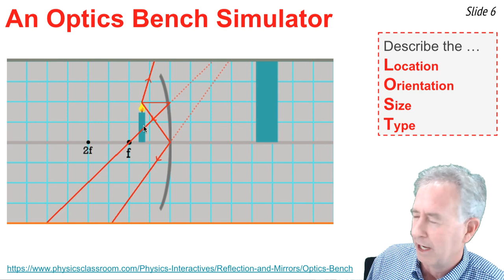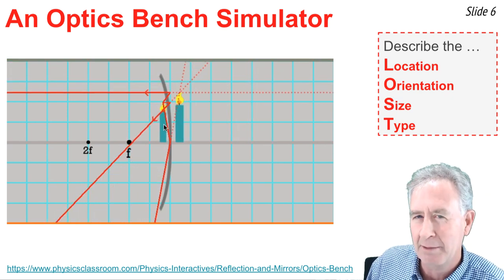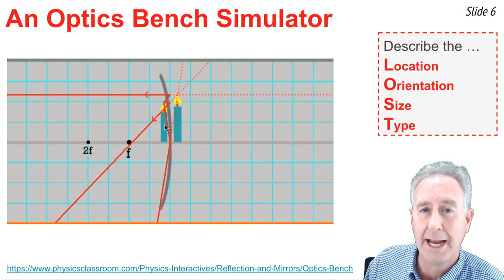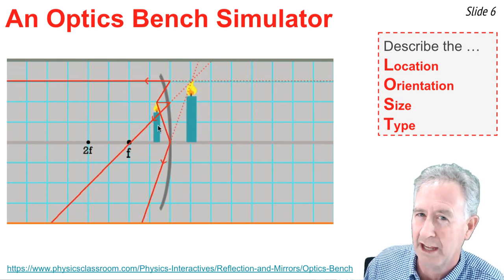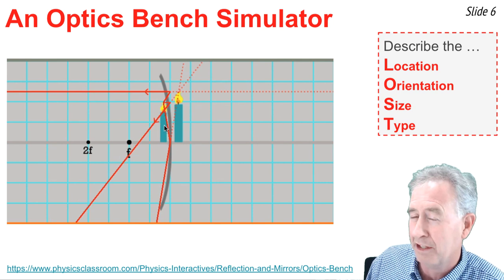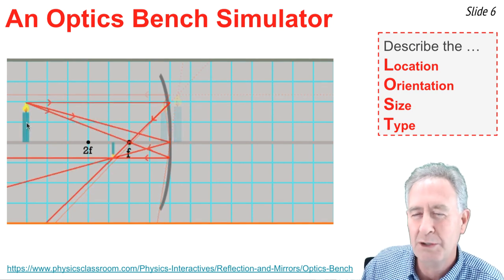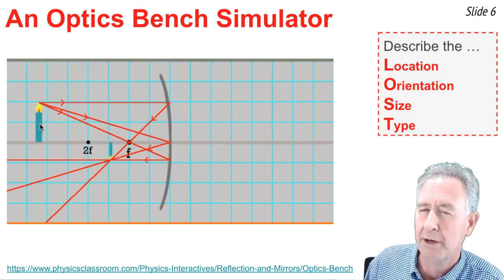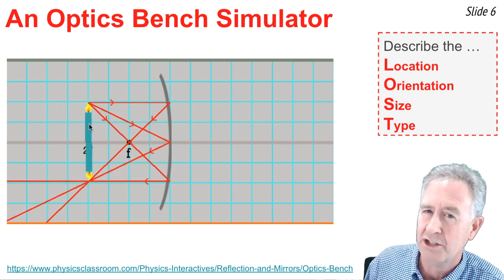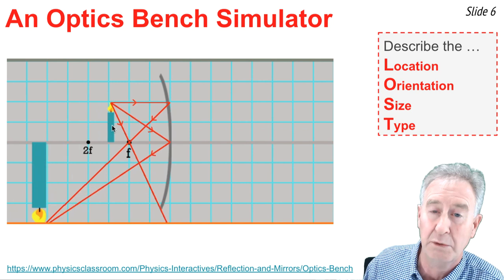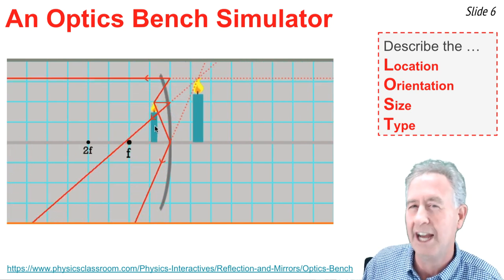When I move the object to a position in front of the focal point, we notice for the first time that the image is behind the mirror. It's a magnified and upright image, and since the reflected rays are diverging after reflecting off the mirror, we can reason that this image is virtual. All behind-the-mirror images are virtual. As I drag the object closer and closer to the mirror, it gets larger and larger — still inverted and still real — until finally the object gets in front of the focal point, placing the image behind the mirror, upright and virtual.